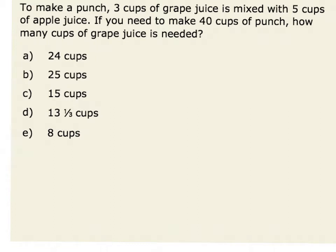One way to solve this problem is to set up a ratio table. I could set up a table with the amount of grape juice to the amount of apple juice. This would be my part-part ratio, and I would recognize that I need three parts grape juice for every five parts apple juice.